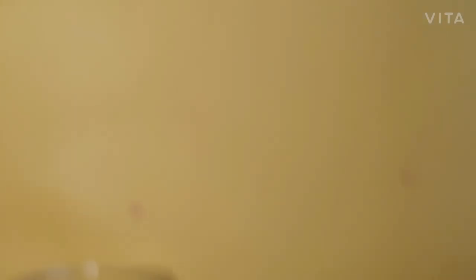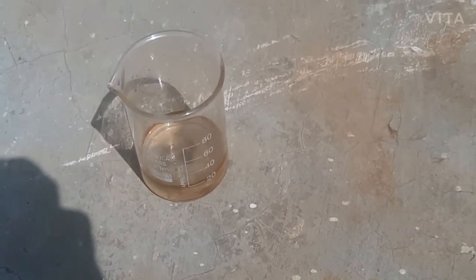To extract the caffeine, we need to evaporate the DCM. DCM boils at around 40 to 50 degrees Celsius. We're going to leave the DCM in the sun to evaporate.